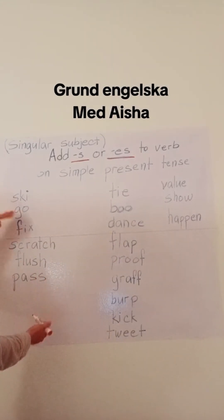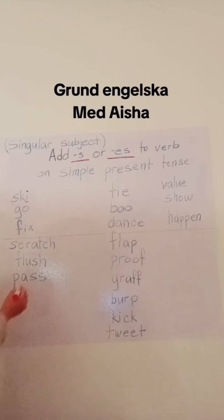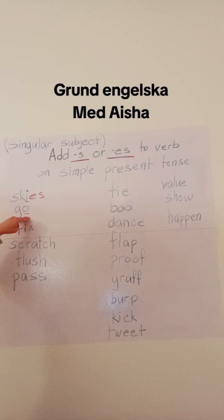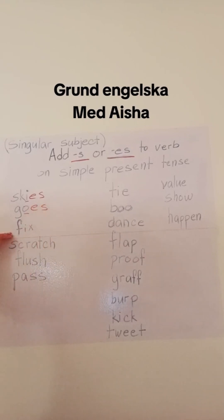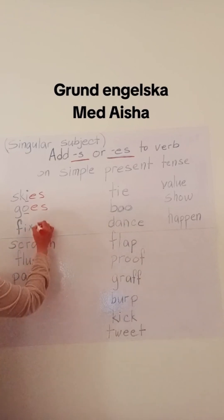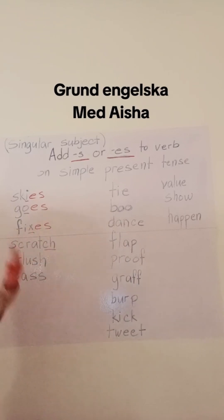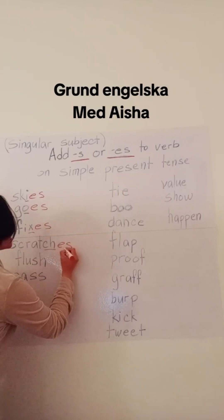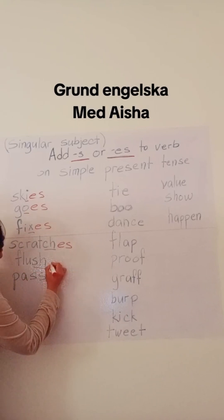If the verb ends with i or e, we have to add es. If our verb ends with one vowel o, we have to add es. If our verb ends with x, we have to add es. And if our verb ends with ch, we have to add es. Now for sh, we have to add es.